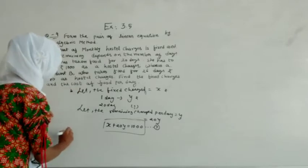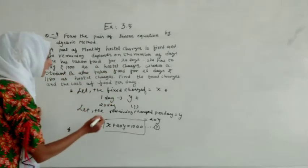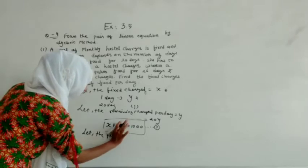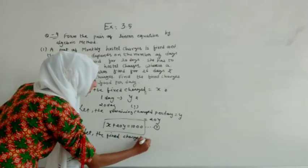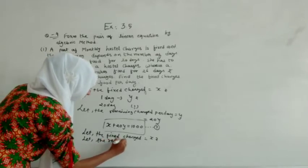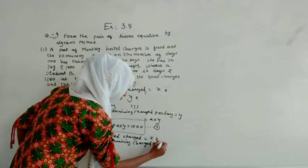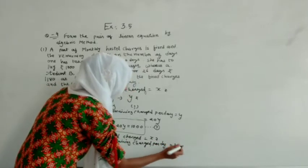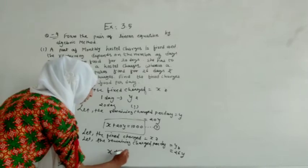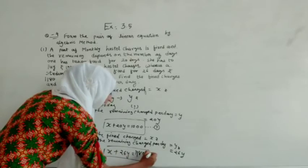Now we have to form the second equation, for which we read the question again. Student B takes food for 26 days. The fixed charge is still X rupees, the remaining charge per day is Y, and for 26 days it becomes 26Y. So the equation is X plus 26Y equals 1180 — that is equation number 2.